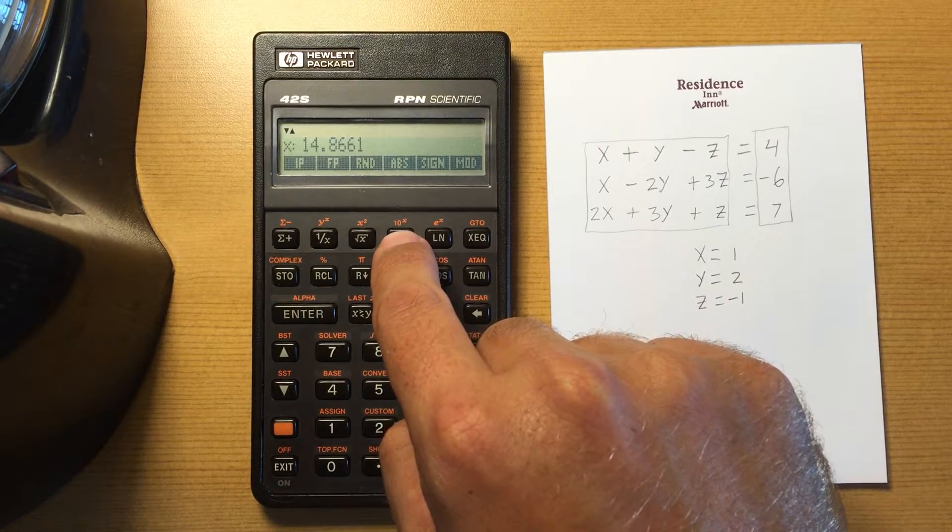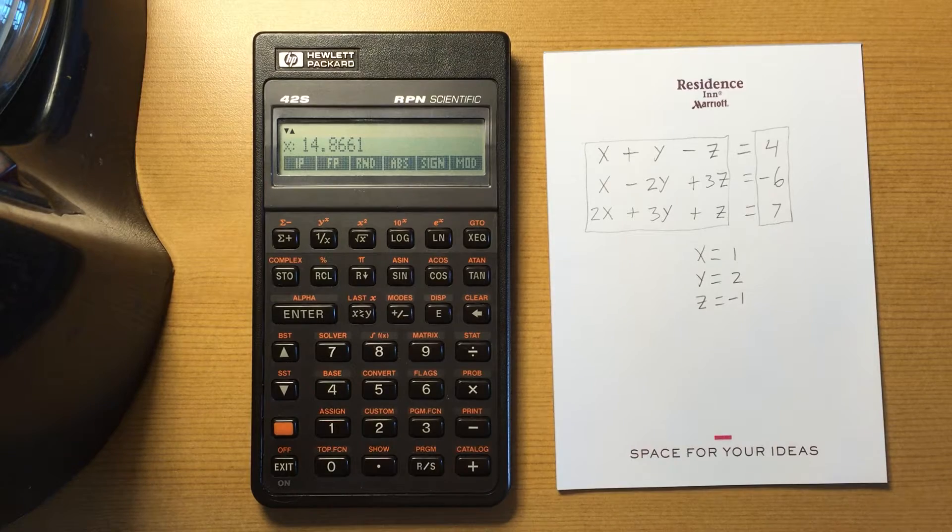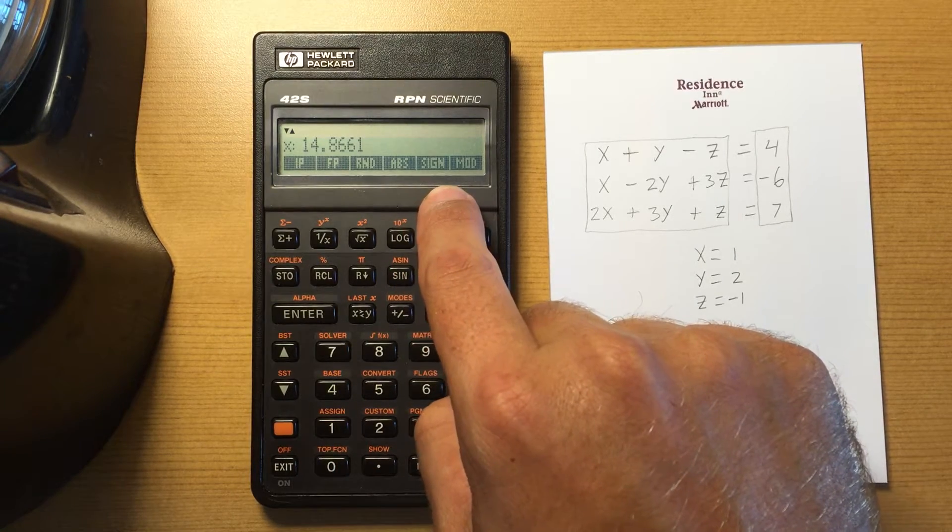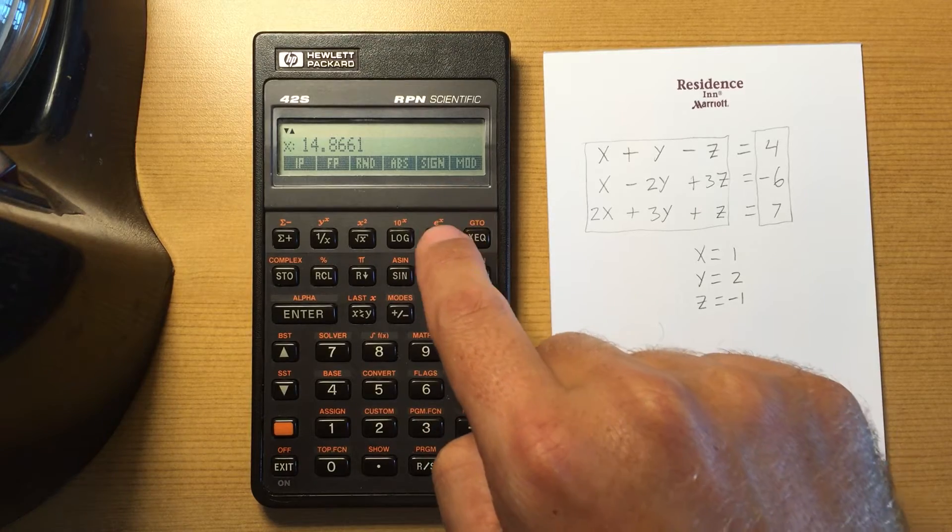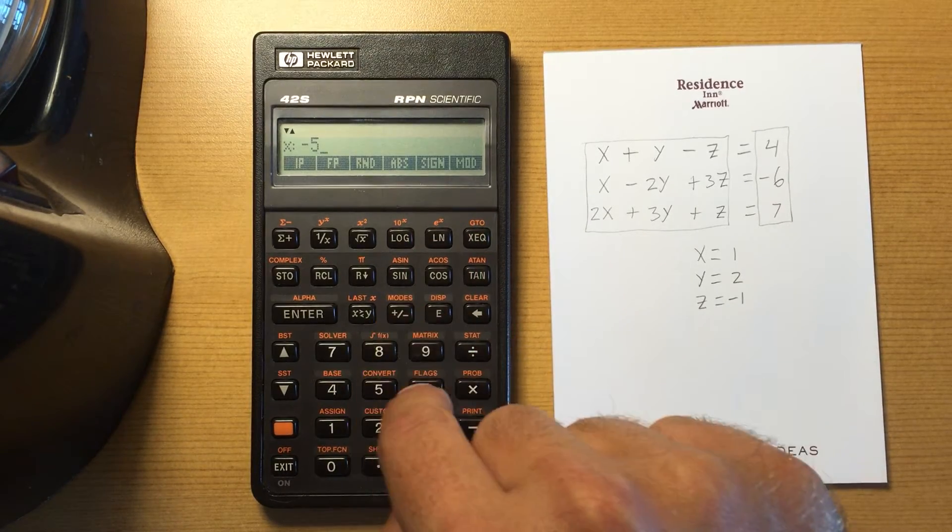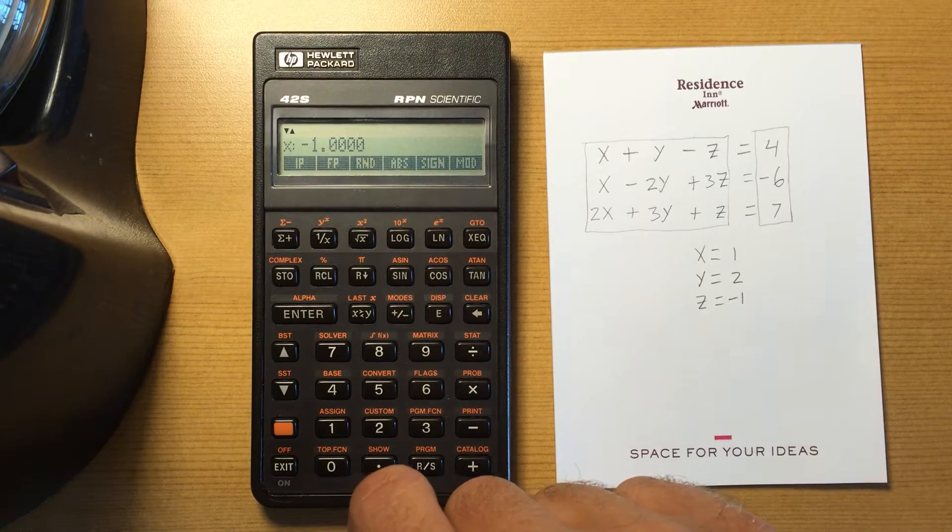All right, this one shows what the sign is. So it returns a 1 if it is positive, and if it's a negative number, it returns a negative 1.